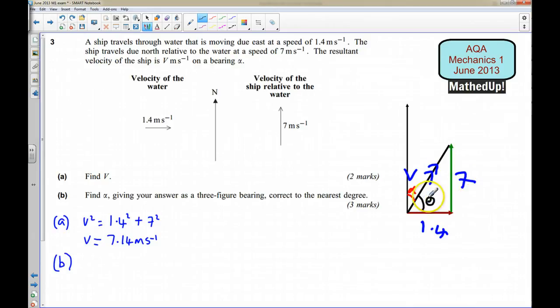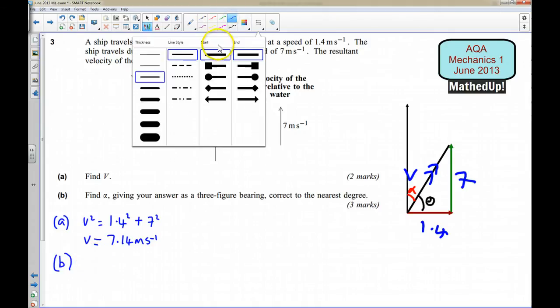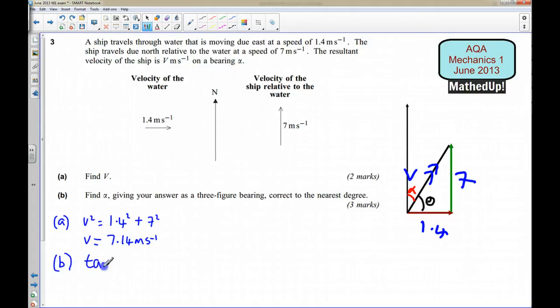So using trigonometry, because this is a right-angled triangle, I know that the tan of this angle is going to be equal to the opposite side divided by the adjacent side. So I can say that tan theta is going to be equal to the opposite side, which is 7, divided by 1.4, which is the adjacent side. And that actually works out to be 5.